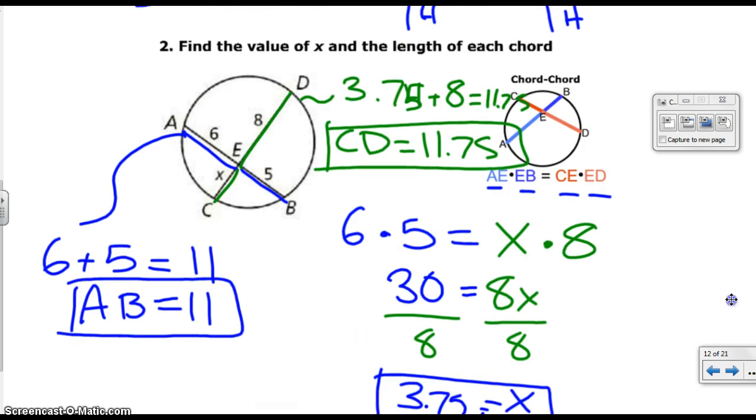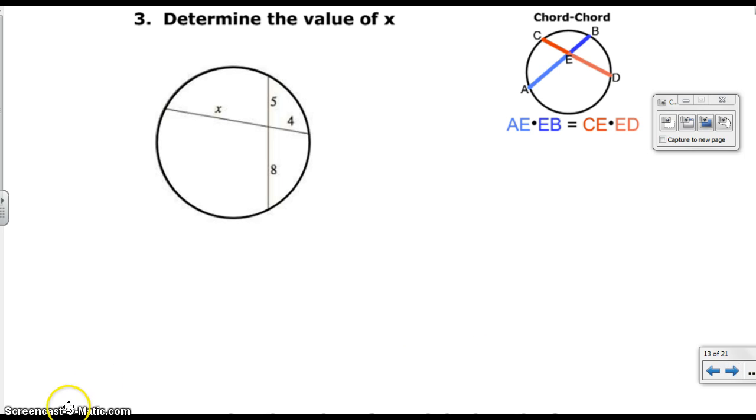Very similar process. Hope you got it. Move on to the next one. Last problem? Last problem. All right. Here's the doozy. Just kidding. Not hard at all. You guys are going to do great on this one. So same idea. I know it's not labeled. You can go ahead and label it if you want to, or you can just remember that the two pieces of the chord multiplied by each other equal the two pieces of the other chord multiplied by each other.